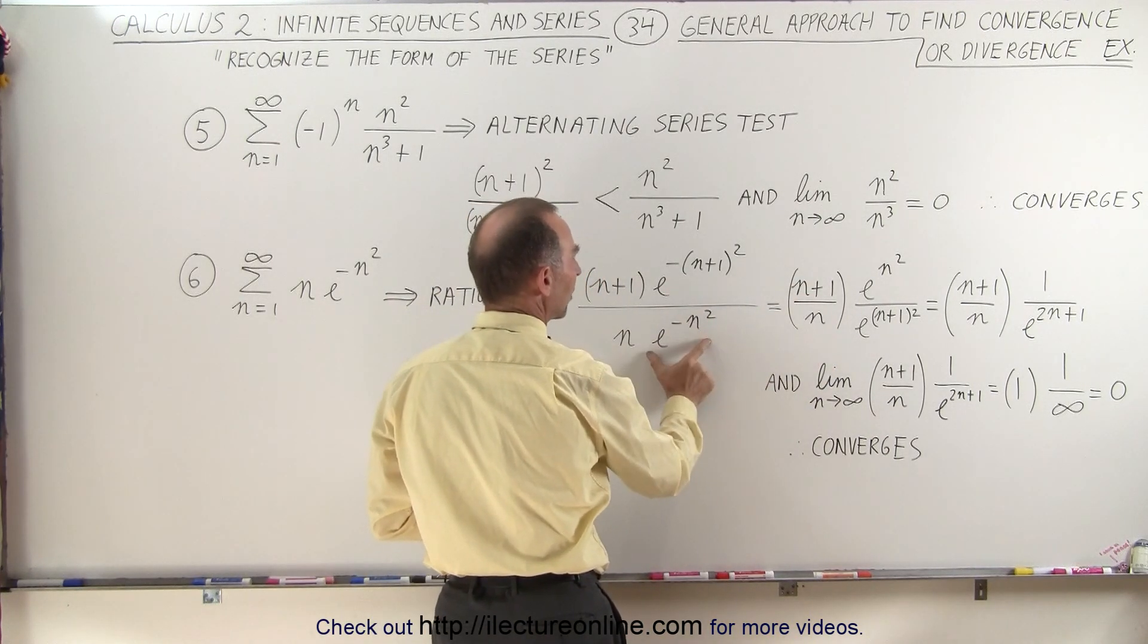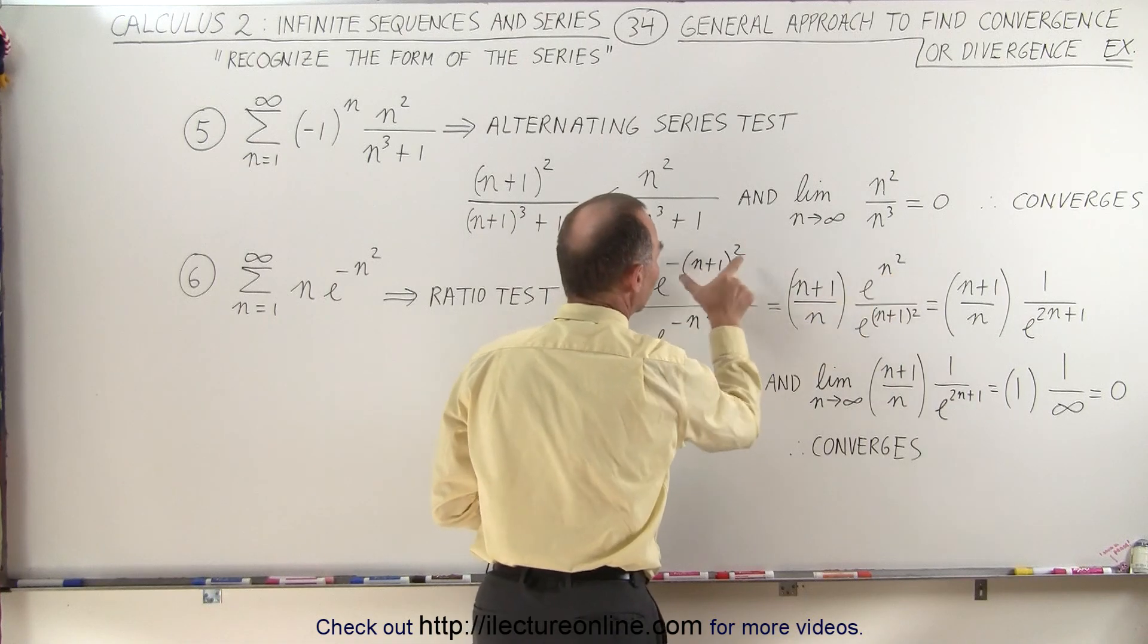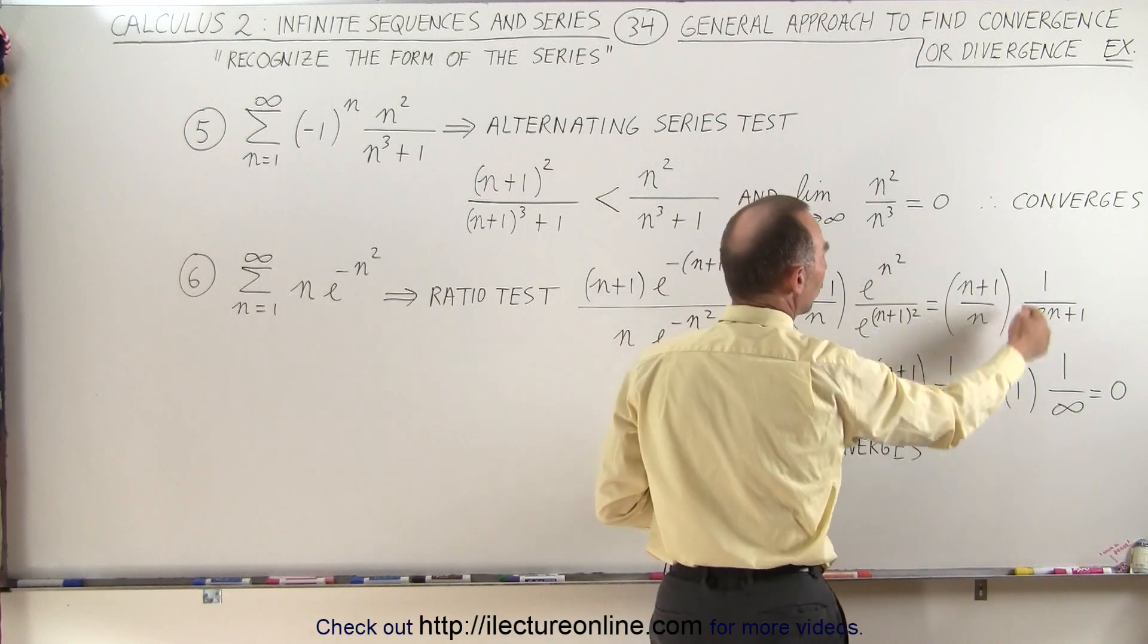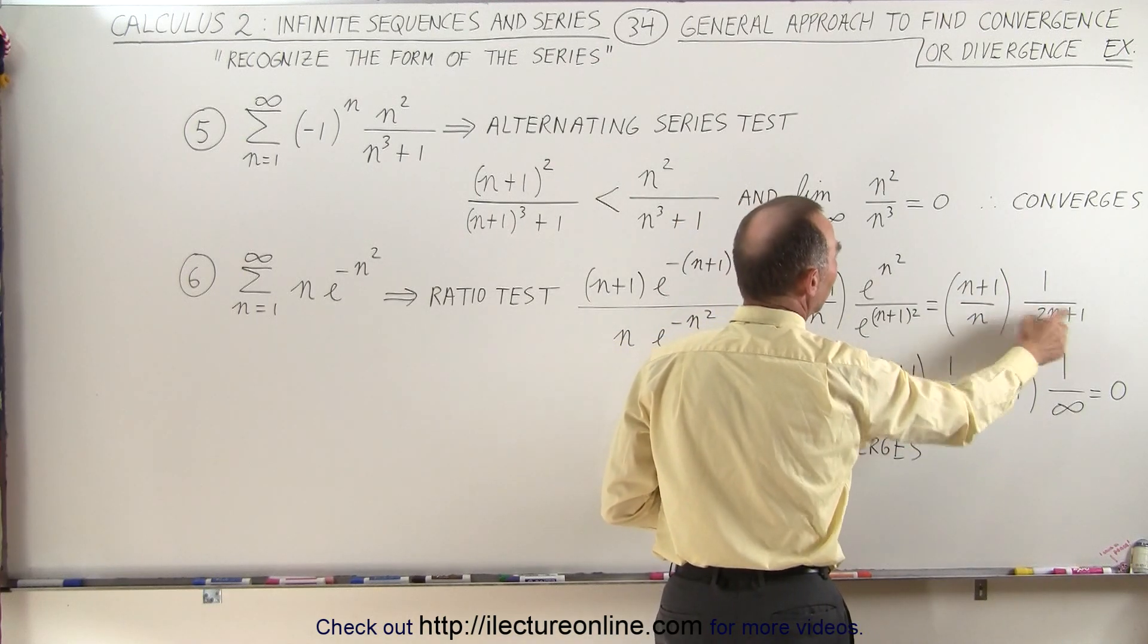And then, since these are negative exponents, we can bring this to the numerator, which becomes positive, and this to the denominator, which becomes positive. When we simplify that, we get one over e to the two n plus one, and we have n plus one over n.